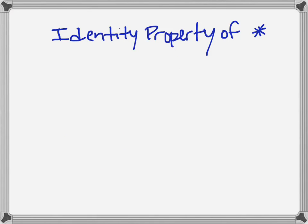In this video, we want to talk about the identity property of multiplication and use that to work with fractions or rational numbers. The identity property tells us that we can multiply any number — even a fraction — by the number one, and the value of that number does not change.